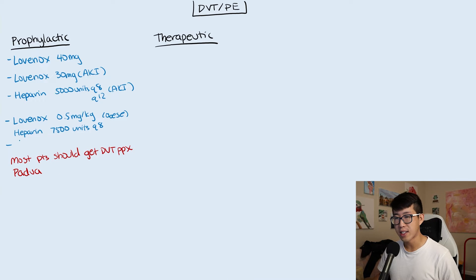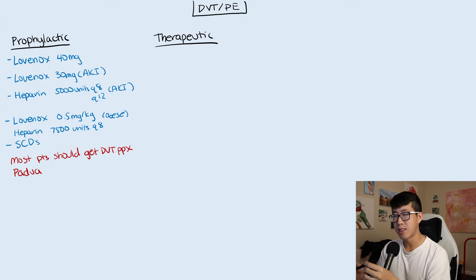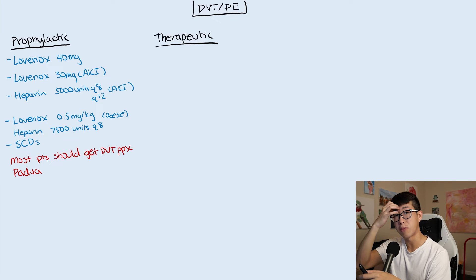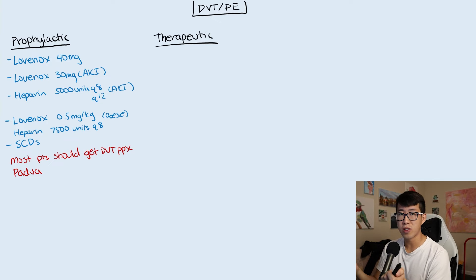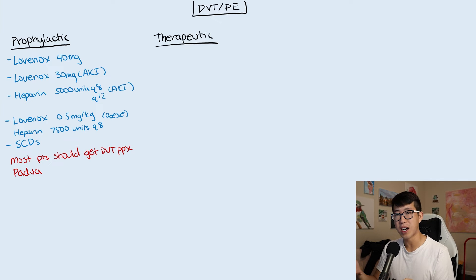Sequential compression devices — also called SCDs or IPCs (intermittent pneumatic compression) — are another tool for DVT prophylaxis. These are placed on the patient's legs and intermittently squeeze or massage them to help prevent DVTs. The evidence isn't super strong, but it's more than nothing. If a patient can't receive pharmacologic DVT prophylaxis due to bleeding risk, SCDs provide at least some mechanical prophylaxis.